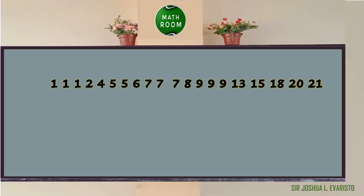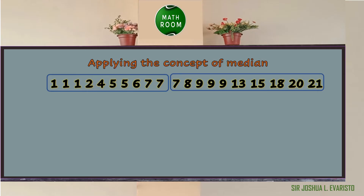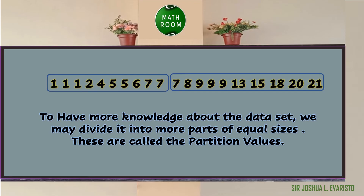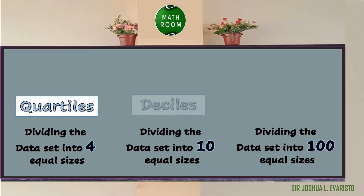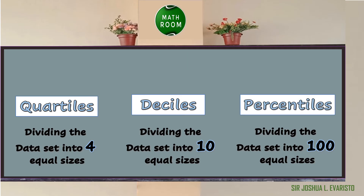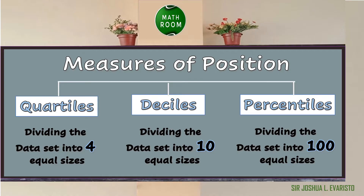Another method to analyze a data set is by arranging all the observations in either ascending or descending order of their magnitude. This ordered set is divided into two equal parts by applying the concept of the median. However, to have more knowledge about the data set, we may divide it into more parts of equal sizes. These are called partition values. Dividing the set into 4, 10, and 100 parts of equal sizes, the corresponding partition values are called the quartiles, deciles, and percentiles. These are the most common measures of position — a technique that divides a set of data into equal groups.